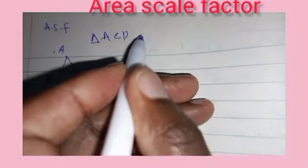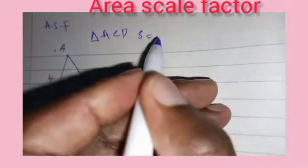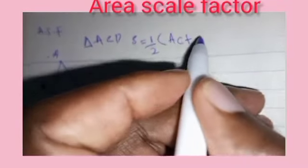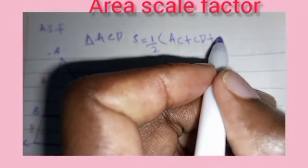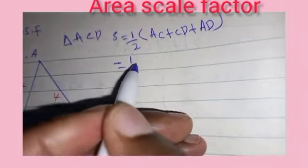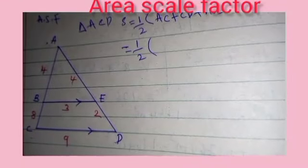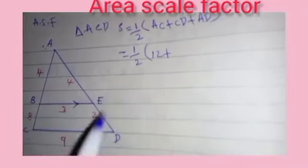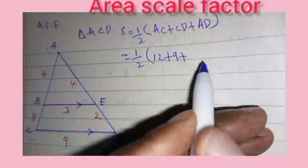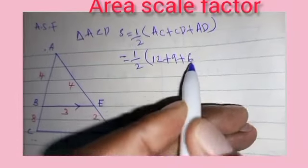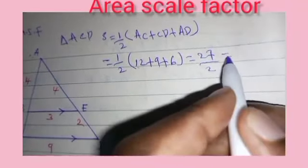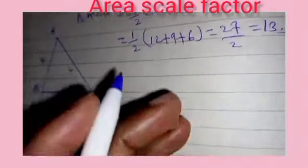First of all we get the half of the perimeter S, which is given by half of AC plus CD plus AD. That is half of: AC is 4 plus 8 which is 12, plus CD is 9, plus AD is 4 plus 2 which is 6. So this is 12 plus 9 plus 6 which is 27, divided by 2, which is equal to 13.5.